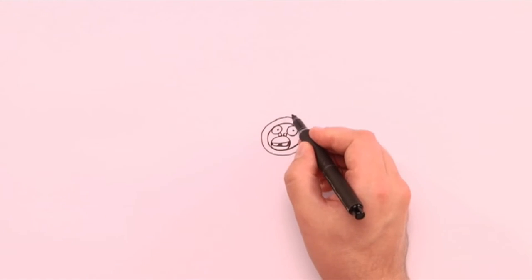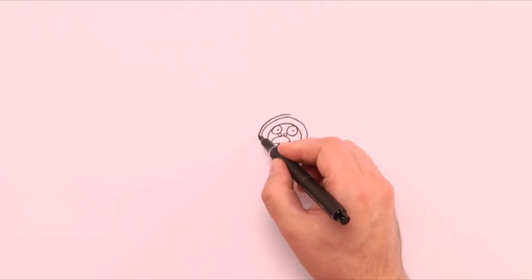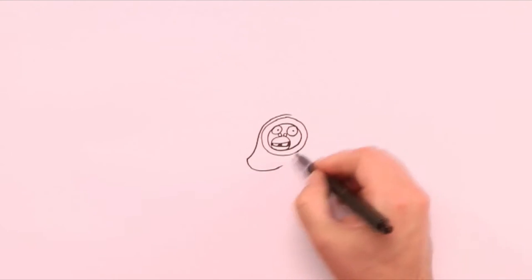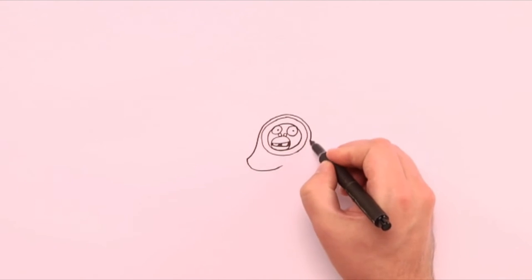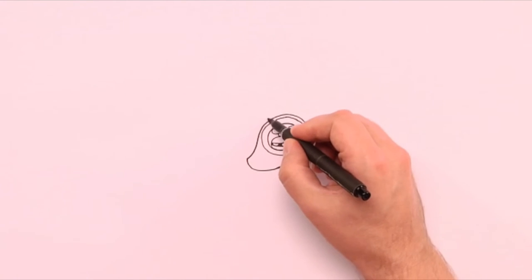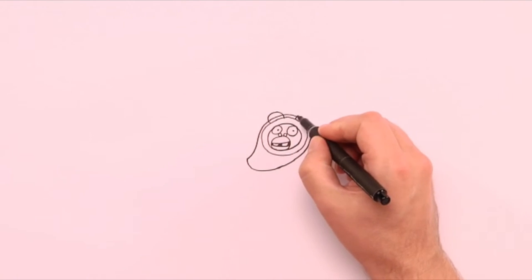Now we are ready for the body. It's a shape that wraps around the first one. On the top comes the round ears.